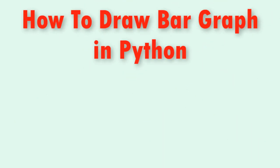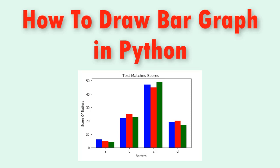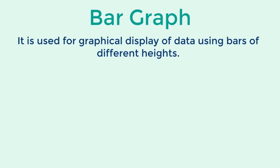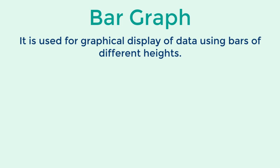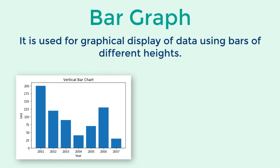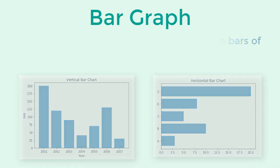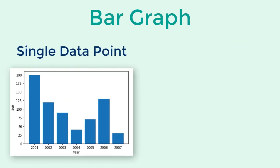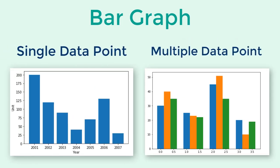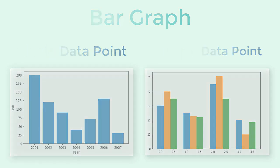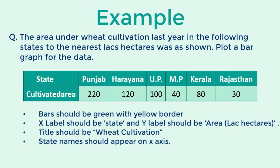Hello, in this video we are going to learn how to solve bar graph questions in Python. A bar graph is used for graphical display of data using bars of different heights. It can be vertical or horizontal. The easy question on bar graph will just have a single data point, and little complex ones will have multiple bars. Let's start with an easy question first.